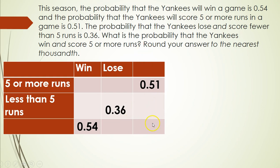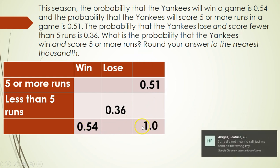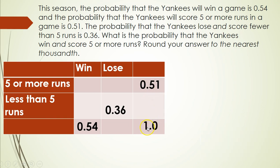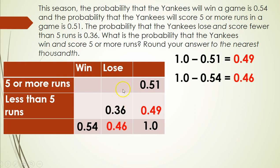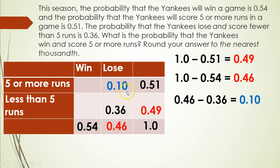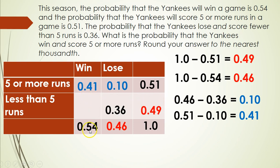Remember, columns and rows have to add up to 1. Subtracting 0.51 from 1 gives us 0.49 for the less-than-five-runs total. Subtracting 0.54 from 1 gives us 0.46 for the losses total. Then subtracting 0.36 from 0.46 gives us 0.10. Working up, 0.51 minus 0.10 gives us 0.41 for wins and five or more runs. Finally, subtracting 0.41 from 0.54 gives us 0.13.